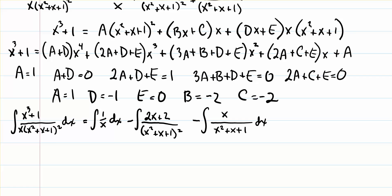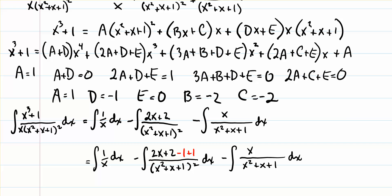We'll work on each of those two integrals one at a time, starting with the second: negative integral of 2x plus 2 over the quantity x squared plus x plus 1 squared. For this one, we would like to use a u-substitution involving x squared plus x plus 1, whose derivative gives us 2x plus 1. Since we don't have that exactly, we do a little trick with the numerator — subtracting 1 and then adding 1 — which lets us split this into two different integrals.